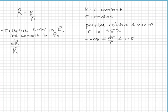So we are given the equation that big R is equal to k over little r squared. I'm going to go ahead and rewrite that in exponential form, where k is a constant, r is our radius, and that the possible relative error in little r is plus or minus 5%.